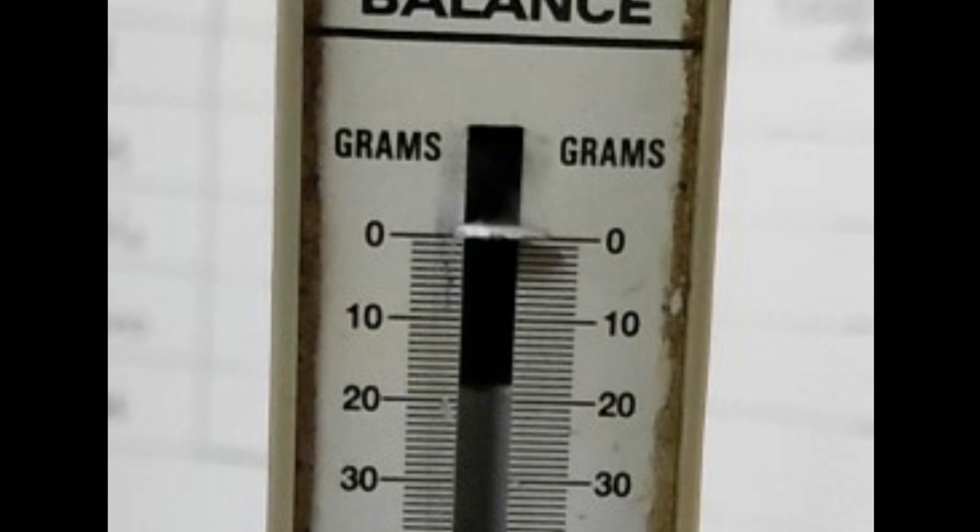We also need to find out what is the value of one division of the spring balance, that is its least count. As you can see here, total number of divisions between 0th mark and 10th mark are 10. So, the value of one division is 1 gram force.